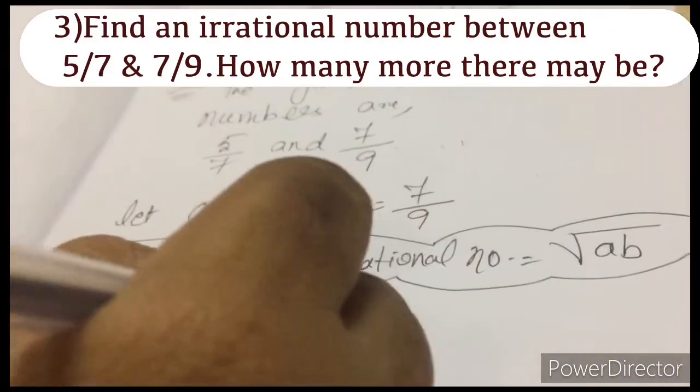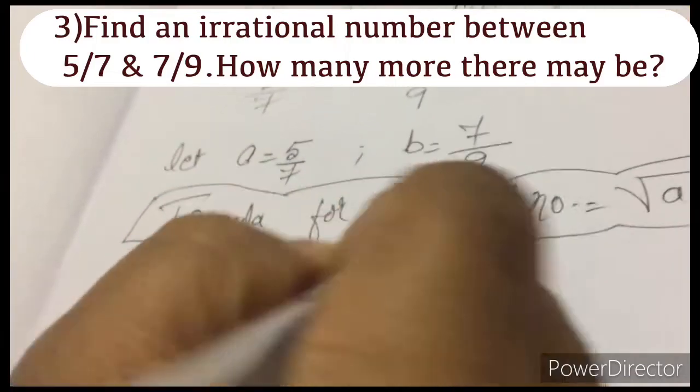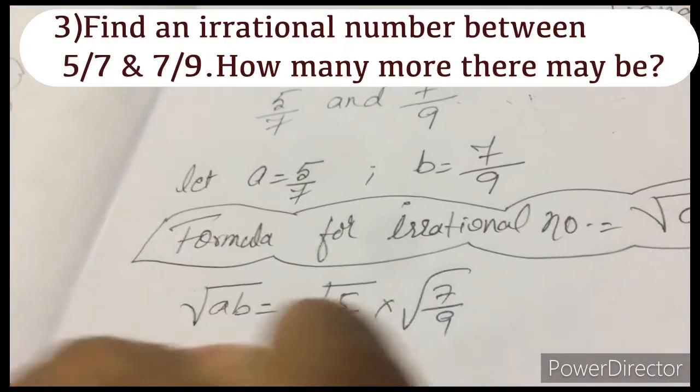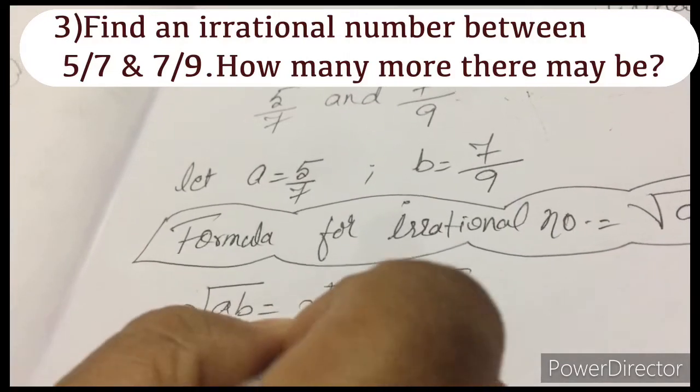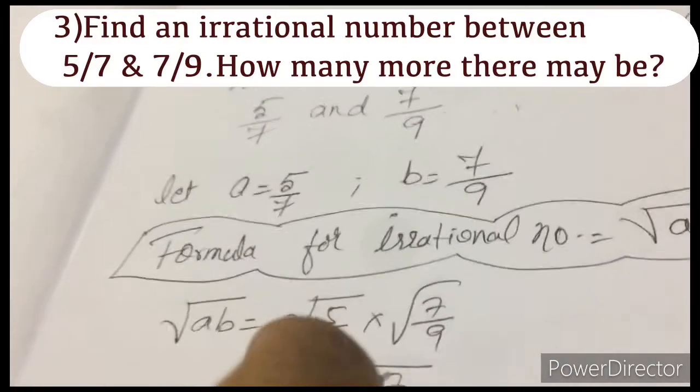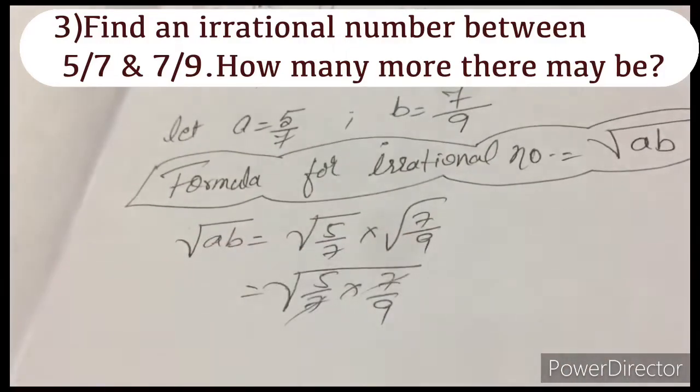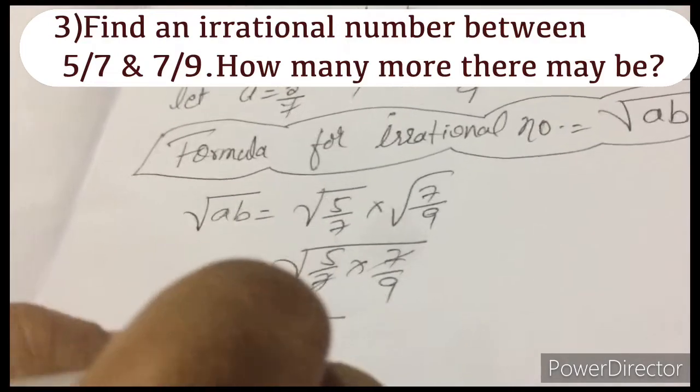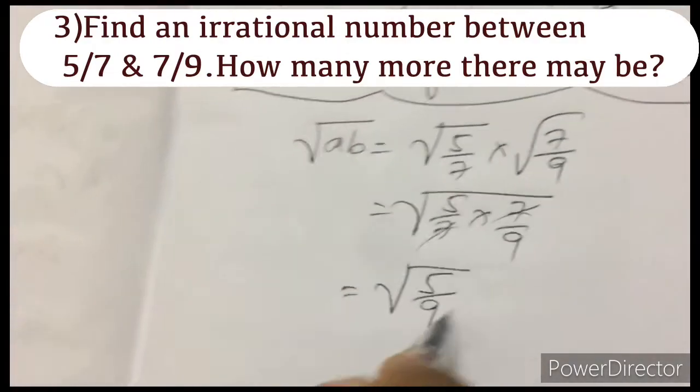Now coming and substituting the value in a, b. This is root 5 by 7 into root 7 by 9. I can club this root. I can write one root 5 by 7 into 7 by 9. Seven, seven gets cancelled. Now what's remaining?